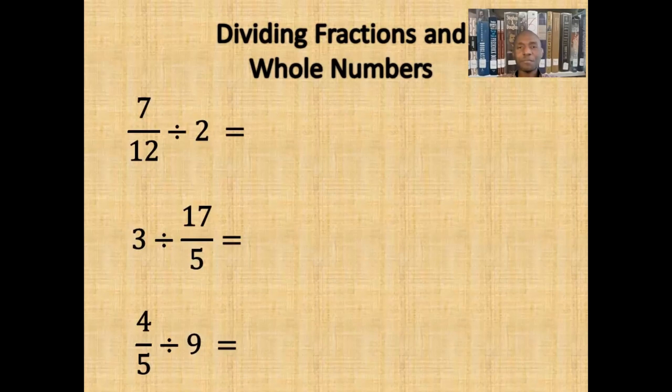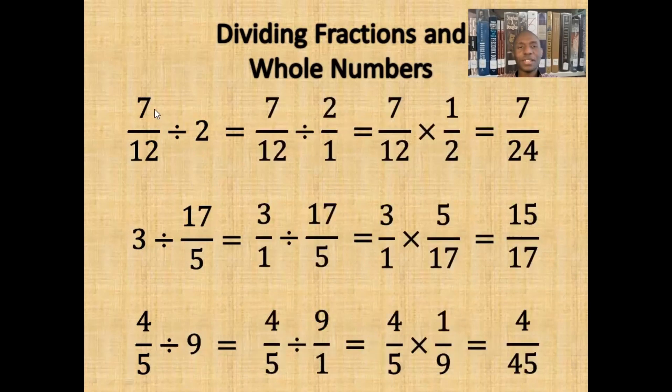Now let's check out the answers. 7 twelfths divided by 2 gives us 7 twenty-fourths. 3 divided by 17 fifths gives us 15 seventeenths. 4 fifths divided by 9 gives us 4 forty-fifths.